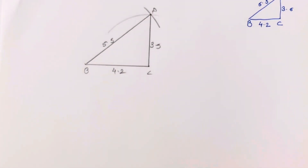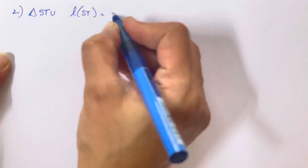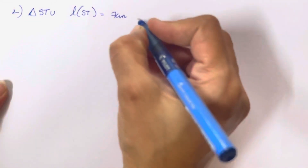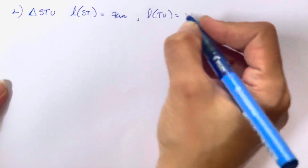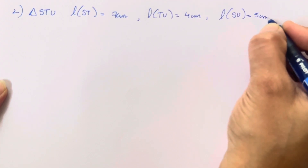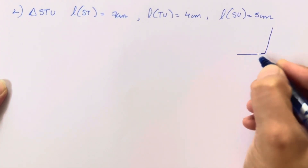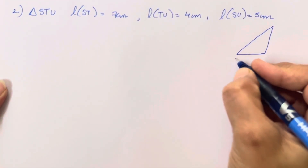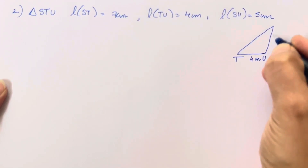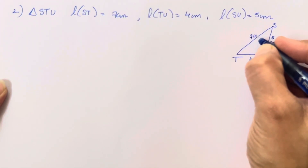Let's move on to the next question, which is triangle STU: length of ST is 7 cm, length of TU is 4 cm, and length of SU is 5 cm. First we will draw a rough figure. TU is 4 cm, SU is 5 cm, ST is 7 cm.